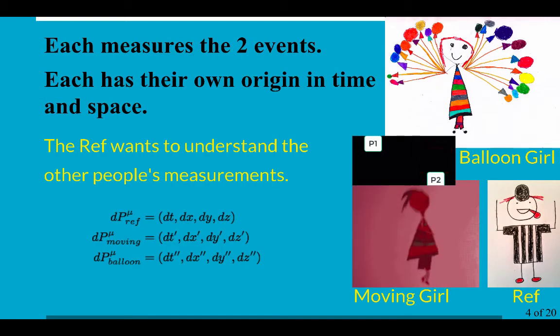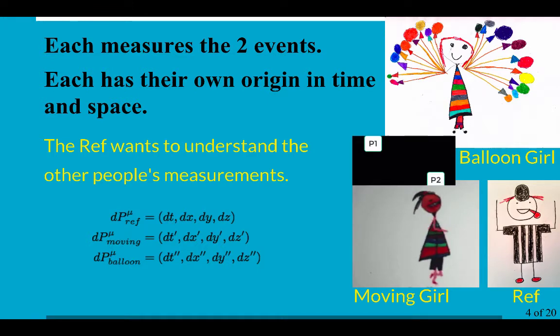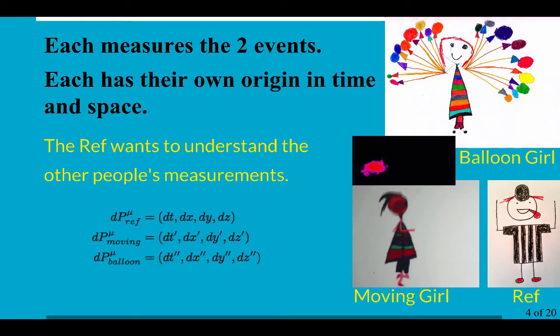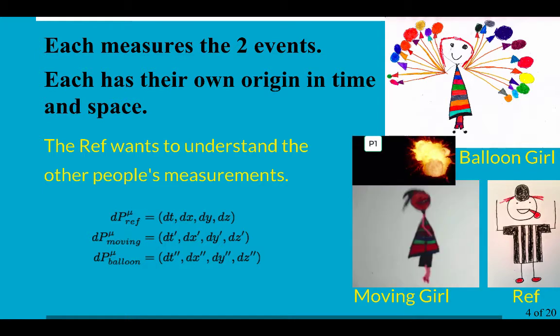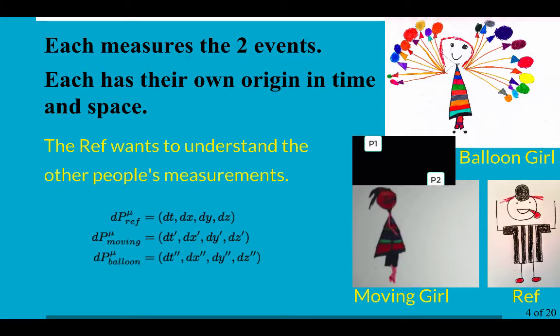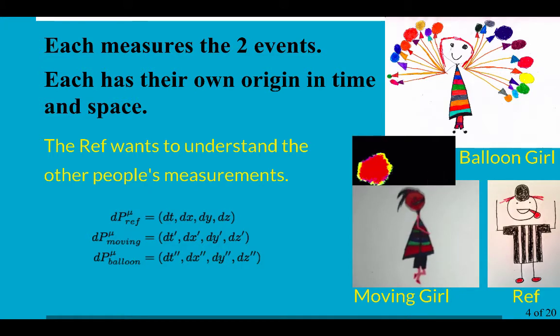So they measure these two events. They have their own origins in space. They have their own origins in time. They have their own angles on things. So none of their measurements are going to be exactly the same. And that's why we give primes for the skipping girl and double primes for balloon girl.